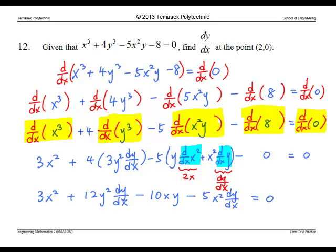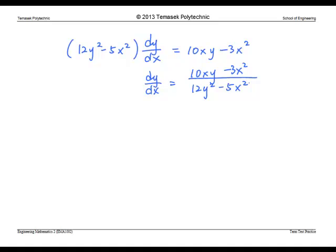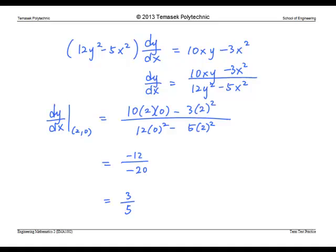Collecting dy/dx terms on one side, we get, and on the other side, we have, thus dy/dx is equal to this quotient. To find the value of dy/dx at the point 2 comma 0, we simply substitute x equals to 2 and y equals to 0 in this expression. This is 3 over 5. 3 over 5 is actually the gradient of the tangent line at the point 2 comma 0.